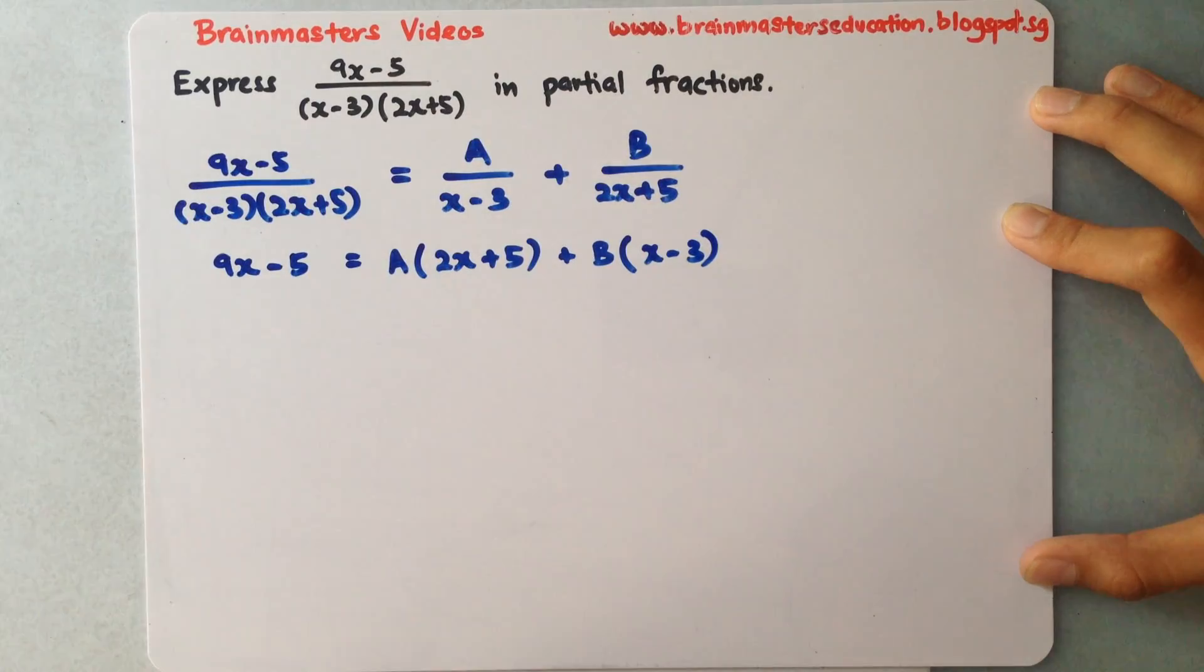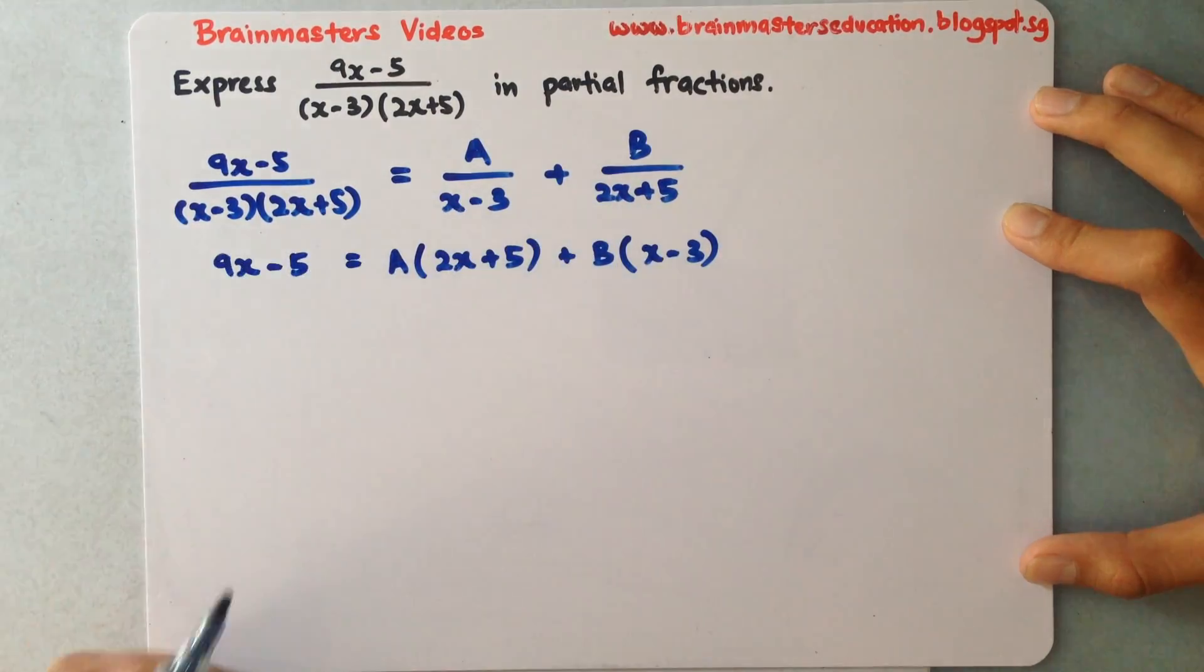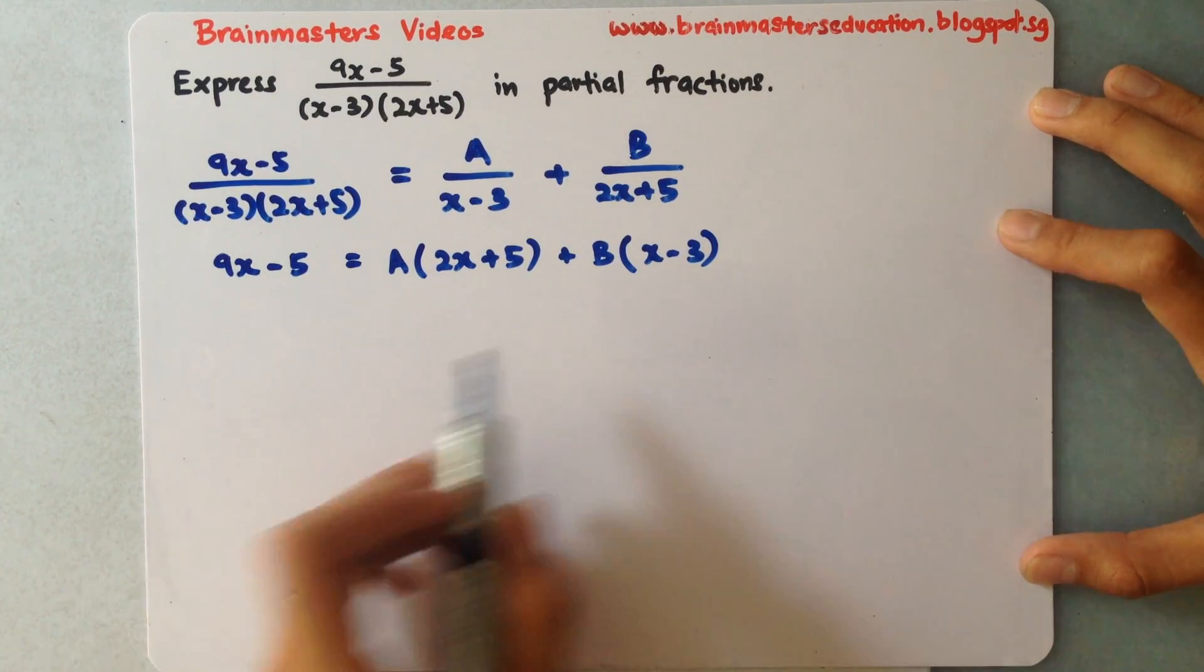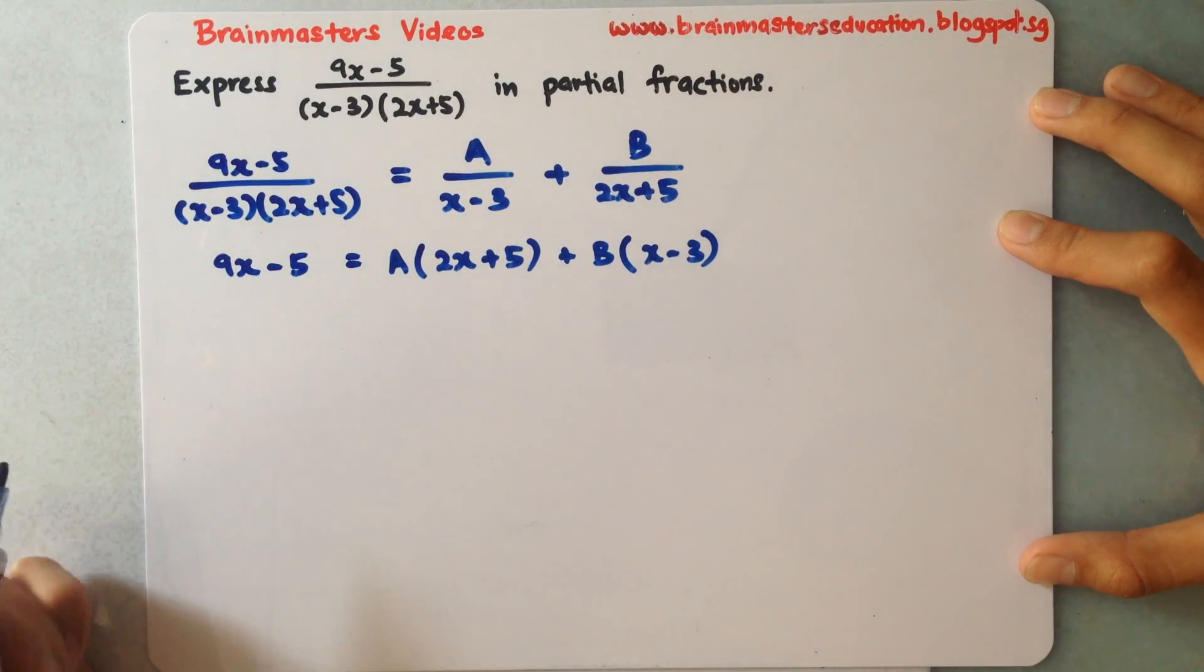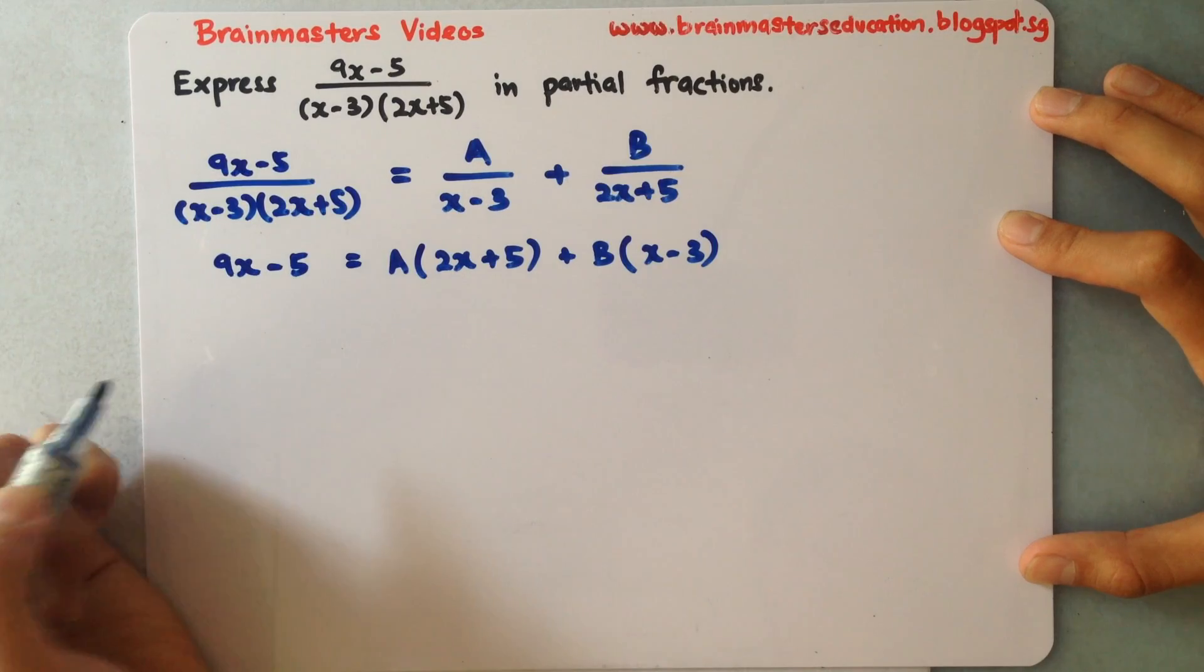I only write out the numerator; the denominators will cancel off one another when they have the same denominator. I'll be focusing on the numerator. With this expression now, I will need to substitute x values so as to solve for one of the unknowns, either A or B.